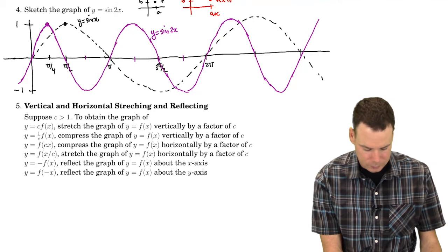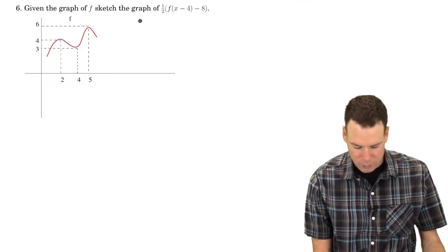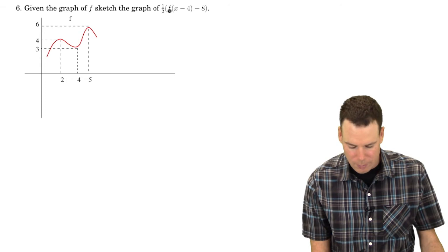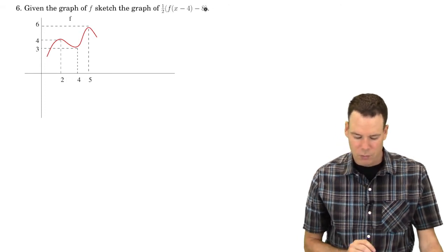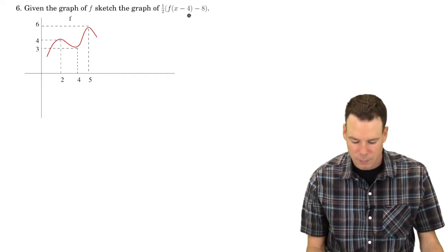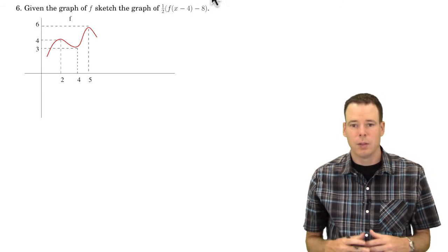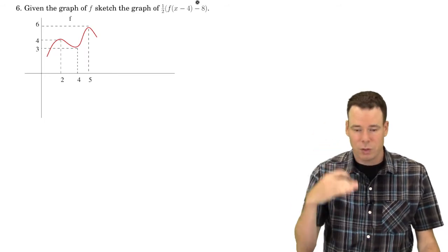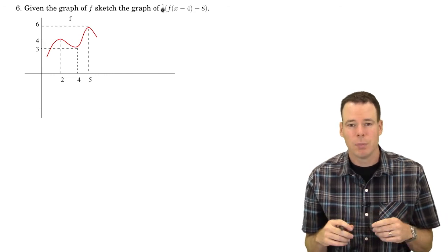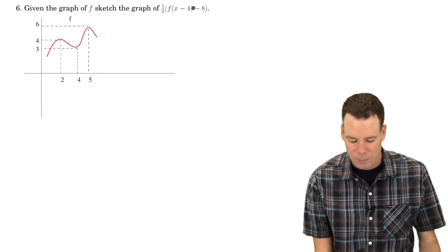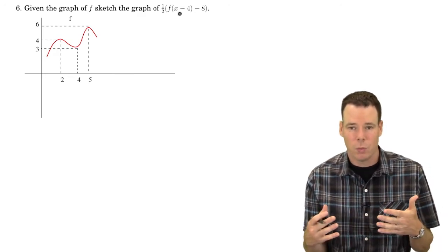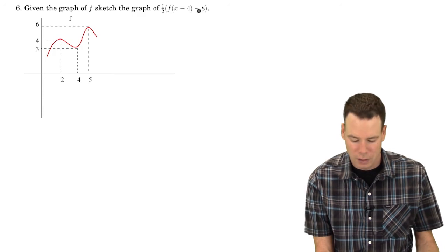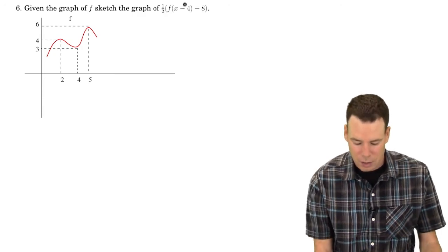Let's put them all together in one last example. We have a sketch of graph f, and we want to find the graph of the function: one-half of f(x minus 4) minus 8. Looking at this, x minus 4 is a horizontal translation, minus 8 is a vertical translation, and one-half is a scaling factor. But let's think carefully about why these transformation rules actually work — why x minus 4 shifts right, why subtracting 8 shifts down, and why one-half is a scaling factor.